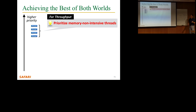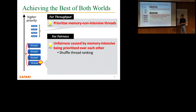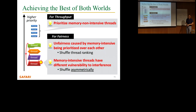How do you achieve the best of both worlds? We group threads into two clusters based on their requests. Some threads are memory non-intensive — mice — some are memory intensive — elephants. You create a non-intensive cluster and an intensive cluster and prioritize the non-intensive cluster for high throughput, since these threads keep their cores busy. Within each cluster you apply different policies. In the non-intensive cluster, you rank smaller threads over larger ones. In the intensive cluster, you must be careful — you want to shuffle the thread ranking to be fair and avoid one thread always being prioritized over others.